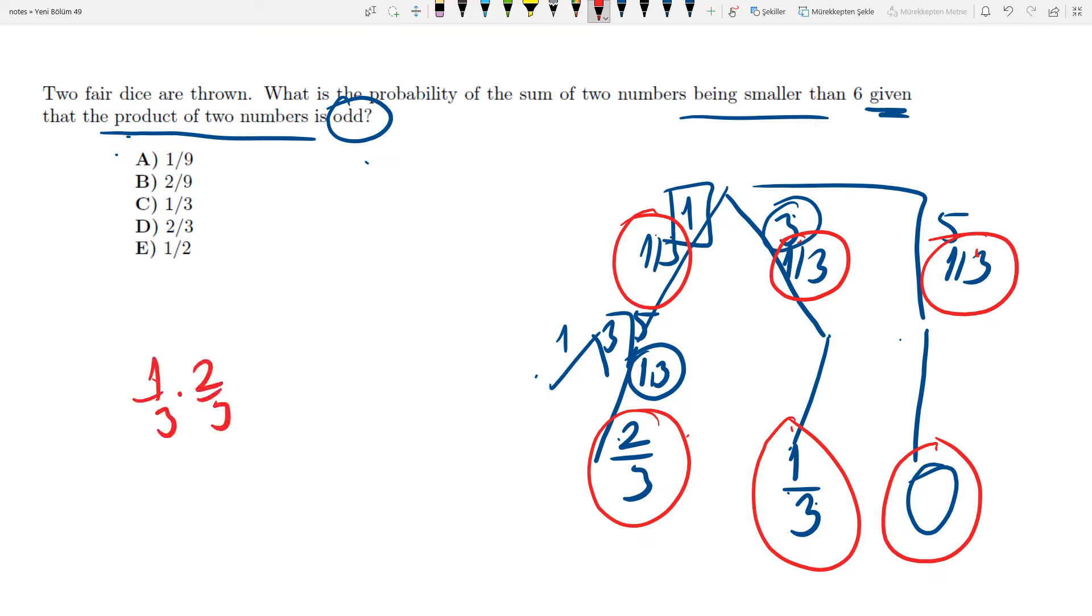One over three times two over three plus one over three times one over three plus zero times one over three, which makes two over nine plus one over nine, three over nine, which is one over three.